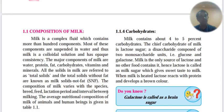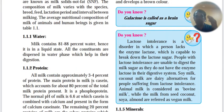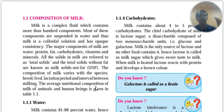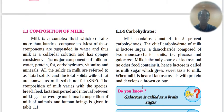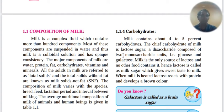Carbohydrate content is 4 to 5%. So protein is 3 to 4%, fat is 3.5% (cow) and 6.5% (buffalo), and carbohydrate is 4 to 5%. The main carbohydrate is lactose. Lactose is a disaccharide made of two monosaccharide components — glucose and galactose. Milk is the only source of lactose, and hence lactose is called milk sugar.